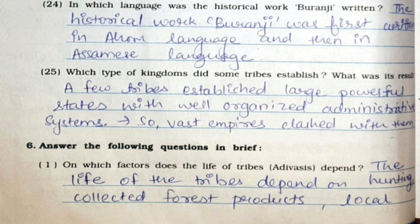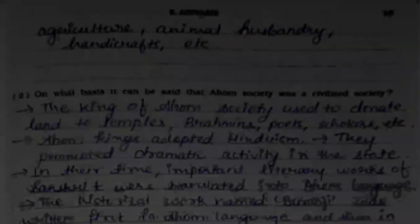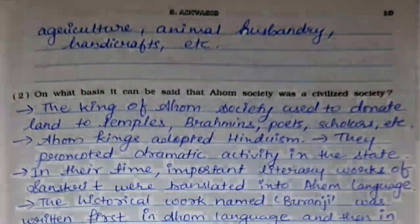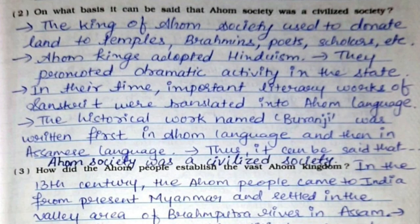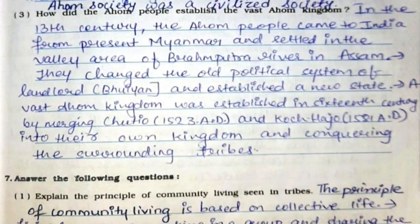Now we'll continue with Question 6, Answer in Brief. First: On which factors does the life of tribal people depend? The life of tribes depends on hunting, collected forest products, local agriculture, animal husbandry, handicrafts, etc. Second: On what basis can it be said that Ahom society was a civilized society? The Ahom kingdom donated land to temples, Brahmins, poets, and scholars. Ahom kings adopted Hinduism, promoted dramatic activity, and important Sanskrit literary works were translated into the Ahom language. The historical work Buranji was written first in Ahom and then in Assamese. Thus, Ahom society was a civilized society.